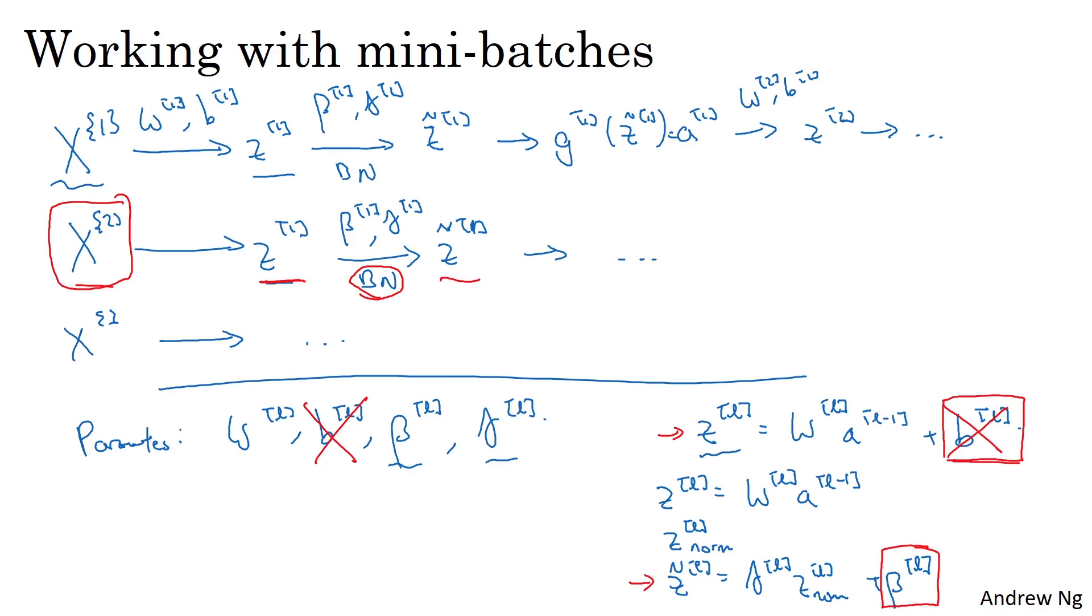So just to recap, because batch norm zeroes out the mean of these zl values in the layer, there's no point having this parameter bl, and so you might as well get rid of it. And instead, it's sort of replaced by beta l, which is a parameter that controls, that ends up affecting the shift or the bias terms.